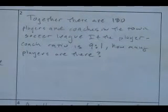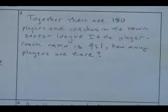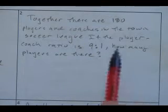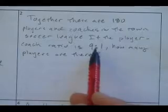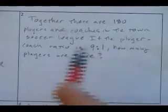Let's solve some. Together there are 180 players and coaches in the town soccer league. If the player to coach ratio is 9 to 1, how many players are there? Well, for every single coach, there's 9 players. So when you see this ratio, you can say there's 9x players and 1x coaches.